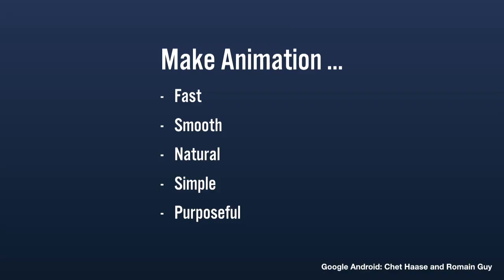Some great animation guidelines from Chet Haas and Romaine Guy at Google Android: try to make animation smooth, natural, simple, and purposeful — and fast. A second is a really long time in interface animation; even half a second is a long time. You don't want to move slower than your users are thinking. Test your use of motion and make sure you're not being overindulgent. When we design cool interface animations, we're all proud of ourselves — but if it's really holding the user up, refine it and speed it up.